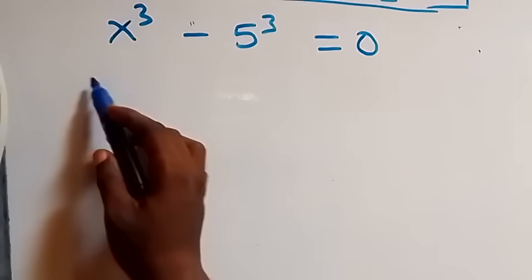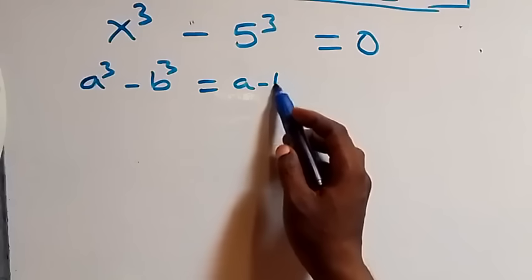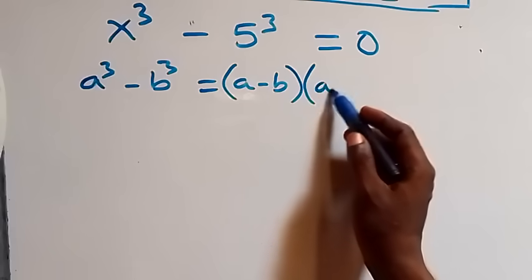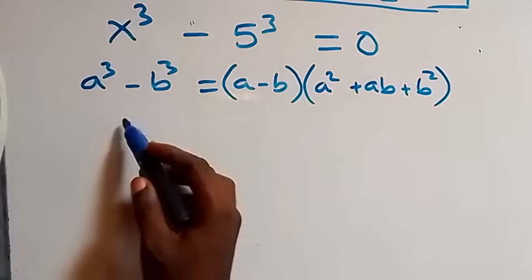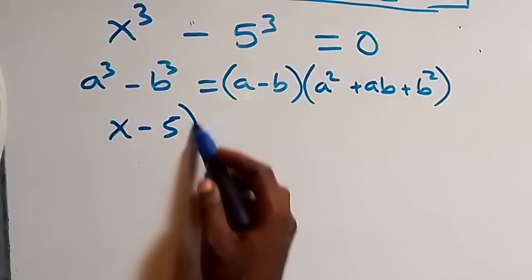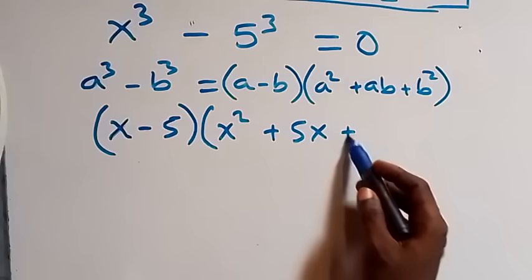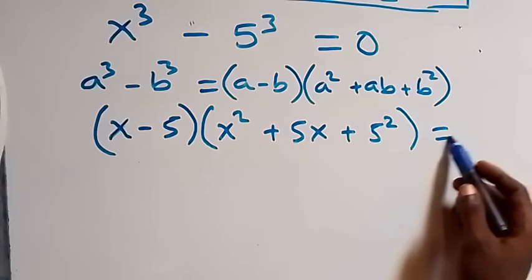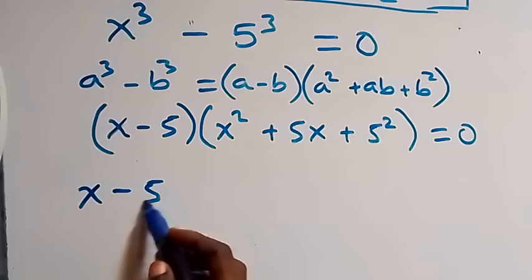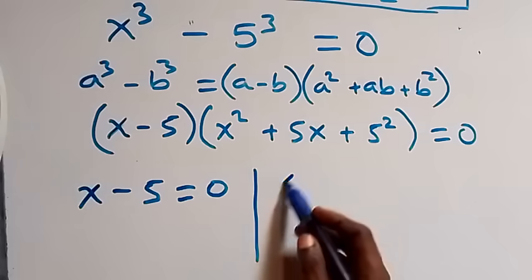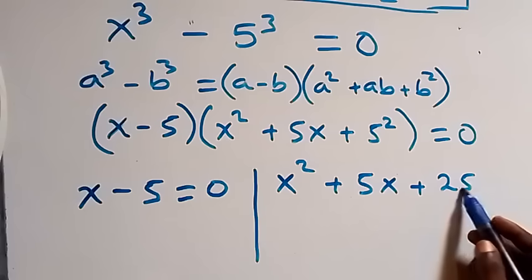Solving the second case using the difference of cubes identity: a³ − b³ = (a − b)(a² + ab + b²). Applying this, we get (x − 5)(x² + 5x + 25) = 0. This gives two sub-cases: x − 5 = 0, or x² + 5x + 25 = 0.